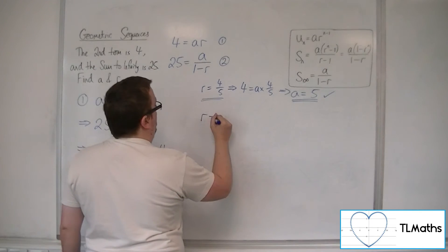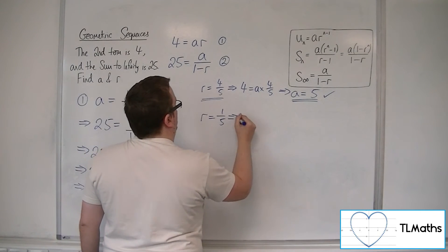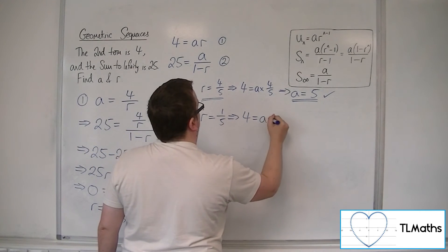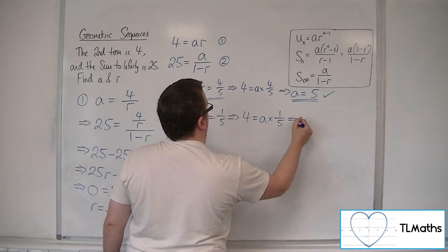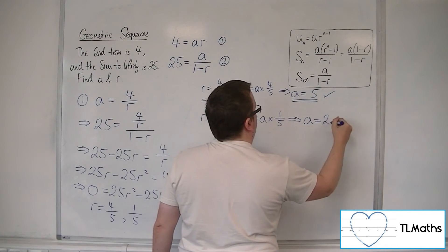Now when r is 1 fifth, substituting that into equation 1, we would get a to be 20.